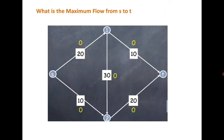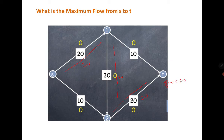Let us consider this example — a directed graph. The question is: what is the maximum flow from s to t? Please do try it yourself. One of the most obvious choices is that you send 20 here, then 20 here, since 30 is the capacity and 20 is the capacity, so the flow can be 20. But we do not know if it is maximum or not.